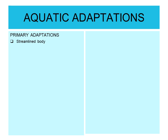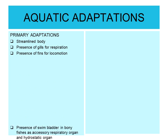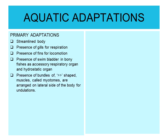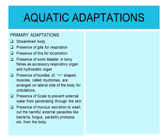Primary adaptation includes: number one, streamlined body; presence of gills for respiration in water; presence of fins for locomotion; presence of swim bladder in bony fishes as an accessory respiratory organ and hydrostatic organ; and presence of bundles of V-shaped muscles called myotomes which are arranged on the lateral side of the body for undulations.